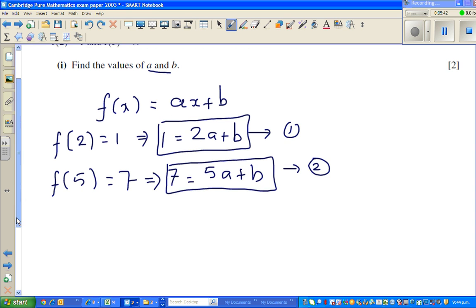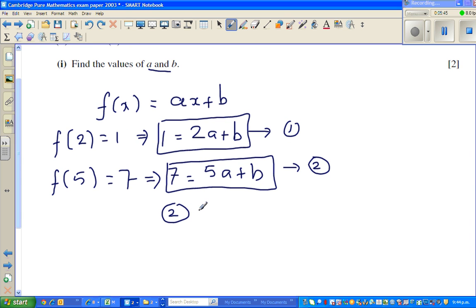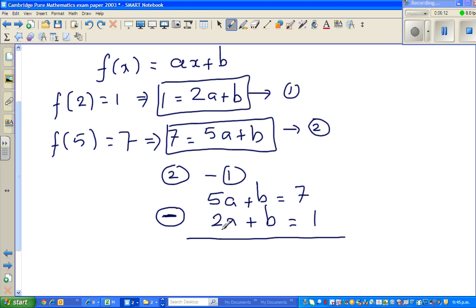I want to find a and b, so I have to solve a and b. I'm going to use 2 minus 1. I'm going to write 2 first. I'm going to write like this: 5a plus b is equal to 7 and this I can write as 2a plus b is equal to 1. So I'm taking away 1 from 2. I'll put a minus here so that I remember. So I'll read like this: 5a take away 2a is 3a, and b minus b will get cancelled, is equal to 7 take away 1 is 6.